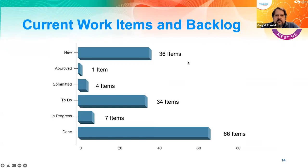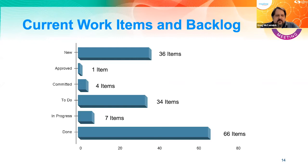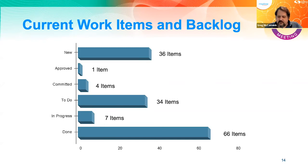Current work items and backlog: there are 36 new items. We go through new, approved, committed, to-do, in-progress, and done stages. There's one item in approved, four in committed, and 34 in to-do or in-progress, with seven done. The project is maintaining good backlogs so there's always something to work on.